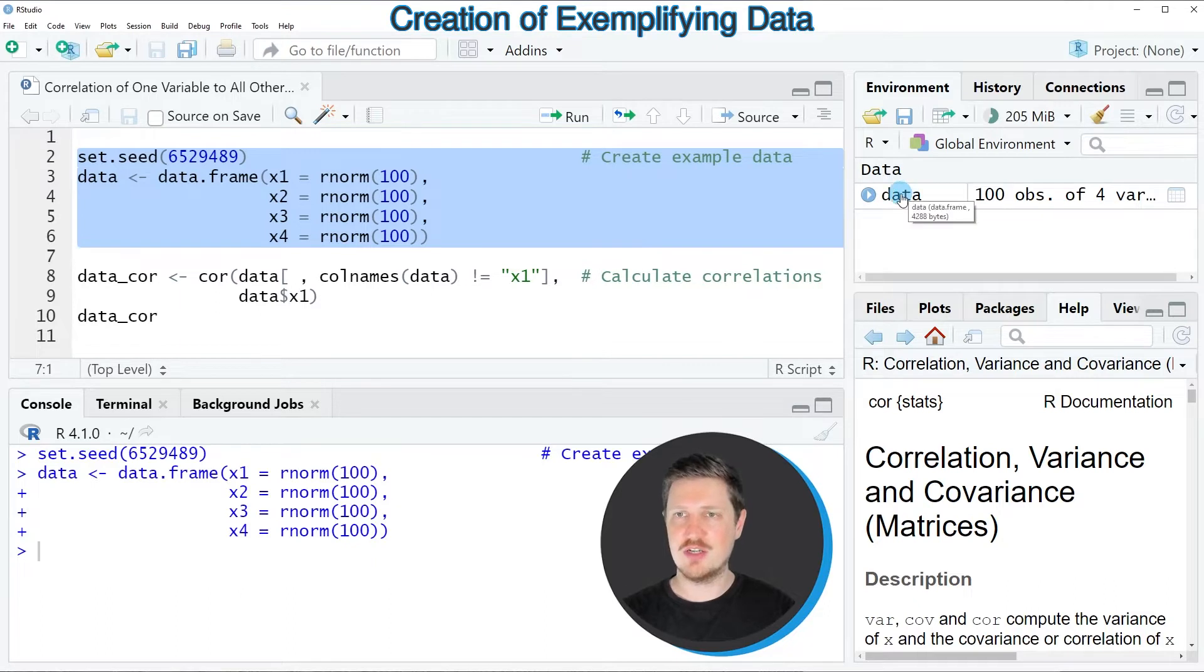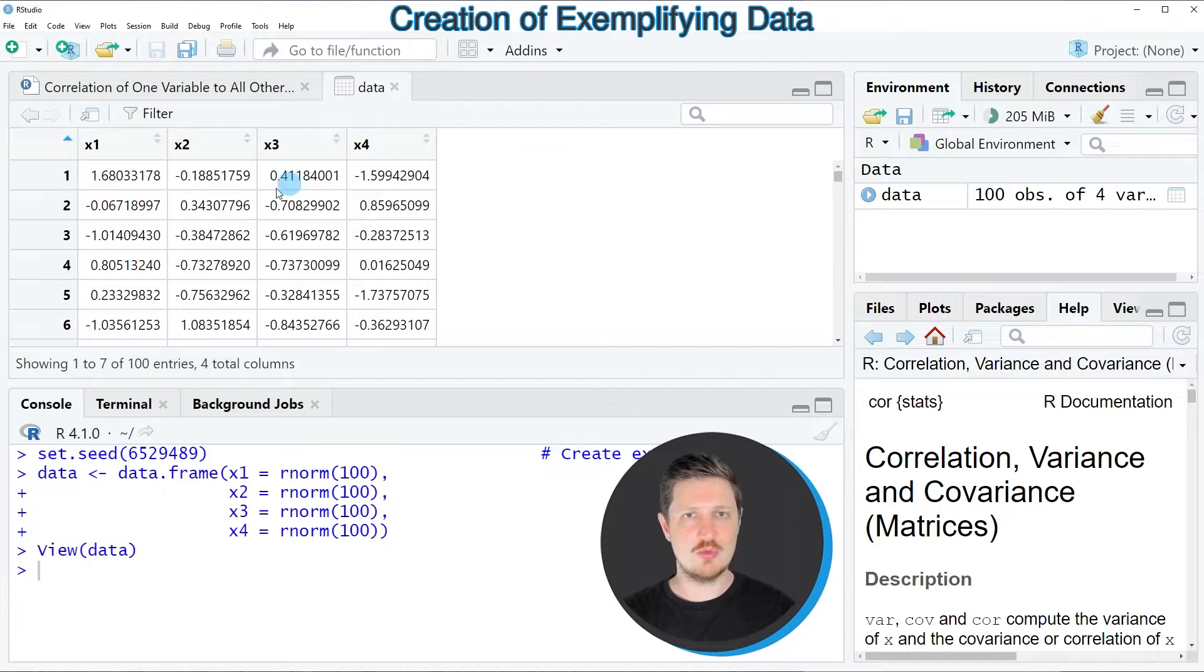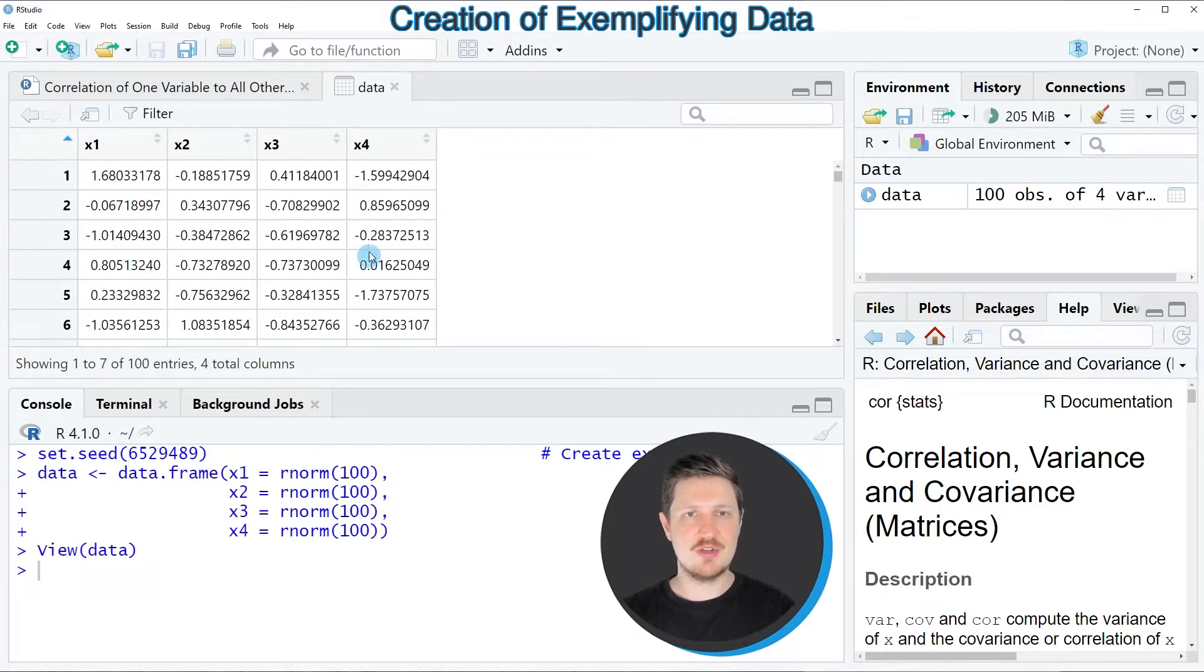If you click on this data set, a new window is opened which shows the structure of our data frame. As you can see, our data frame contains four columns which are called x1, x2, x3, and x4, and all of these columns contain random numeric values.